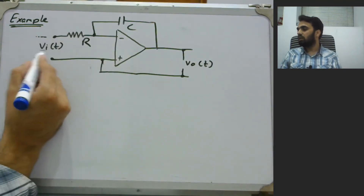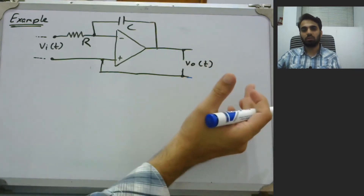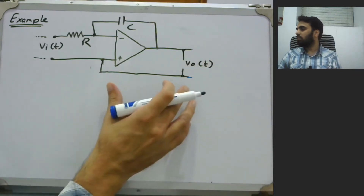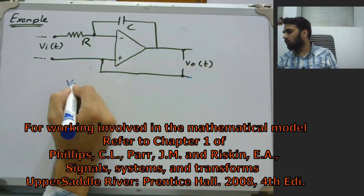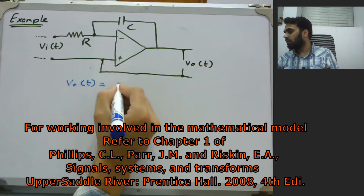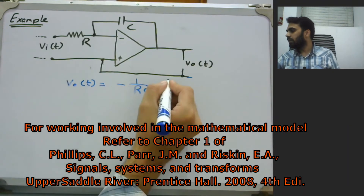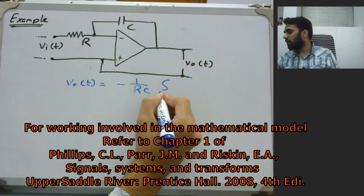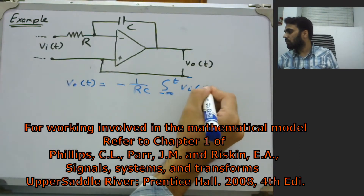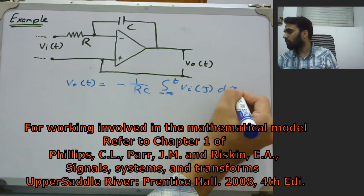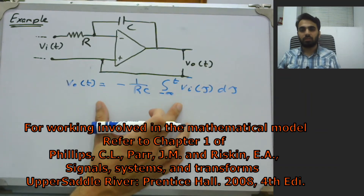We have an input voltage VI of T and we are interested in the output which is V_output of T. This is simply doing an amplification. From electronics we can extract the value of V_output of T, which is dependent on the values of R and C — the time constant RC — and we would have the integral from minus infinity to T of VI of TAU d TAU. This is our system model in terms of an equation.